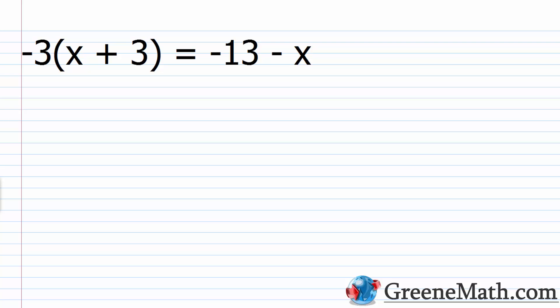In most cases, we're going to work with something known as conditional equations. So these equations are true under certain conditions, but false under others. In the case of a linear equation of one variable, we have something like -3(x + 3) = -13 - x. So let's just solve this for x.